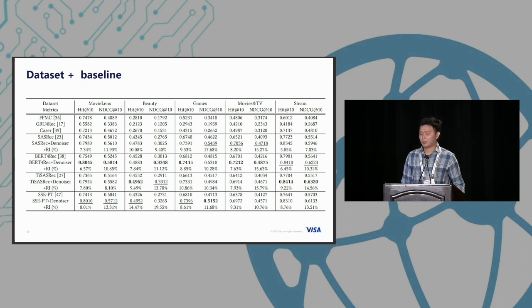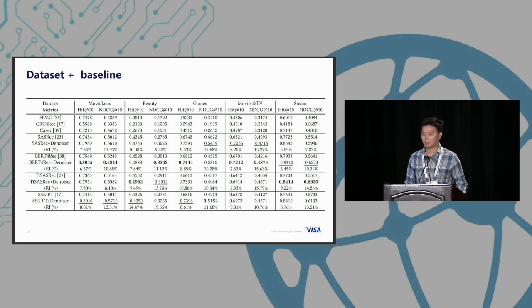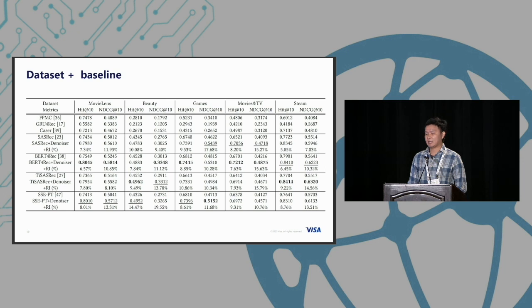These are our results. As we can see, we can improve the performance of the original transformers. The last four rows show that simply plugging in our differentiable mask together with Jacobian regularization improves system performance by an average of about 10% across different datasets.